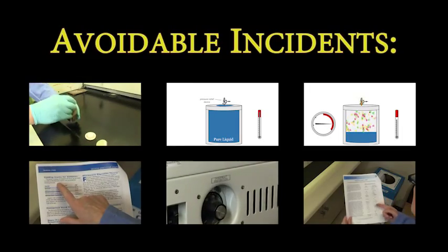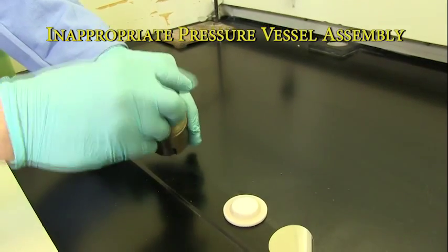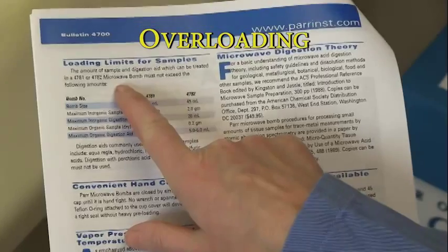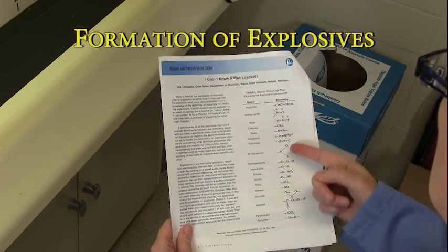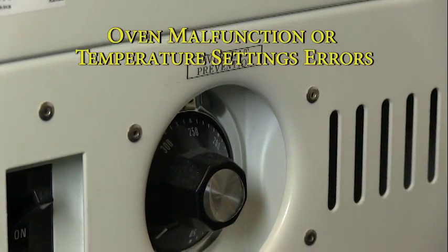The following factors have contributed to avoidable incidents: inappropriate pressure vessel assembly, liquid overfilling, filling with incompatible chemicals, overloading, the formation of explosives, and oven malfunction or errors in setting oven temperatures.